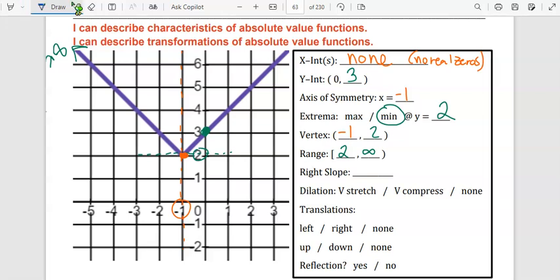The right slope: we look at the right line. Rise over run is 1 over 1, so it's just a positive 1, and up.